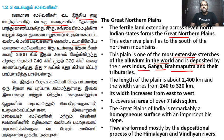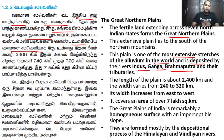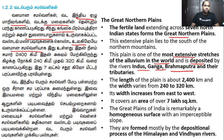The right bank tributaries — we have to go to the right bank. The Brahmaputra River is in Assam, and we have to go to the right bank of the Brahmaputra. This is a fertile land.